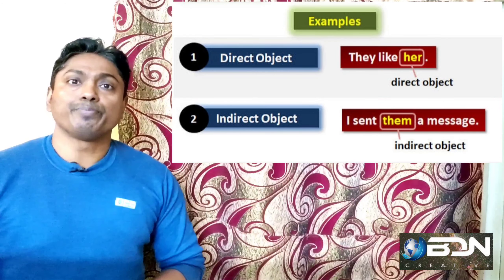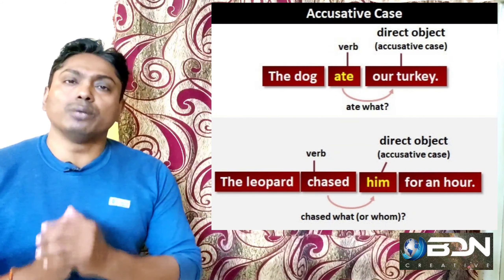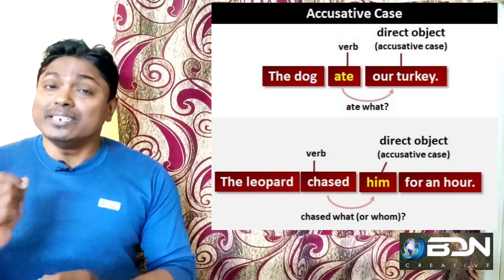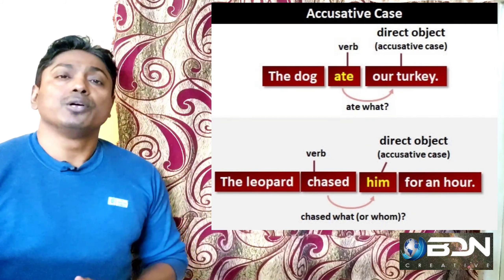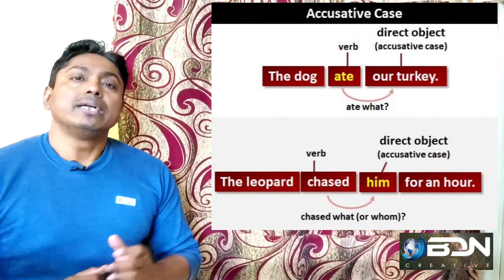In this case, we have mainly three objects. Number 1 is Direct Object, number 2 is Indirect Object, and number 3 is Object of the Preposition.